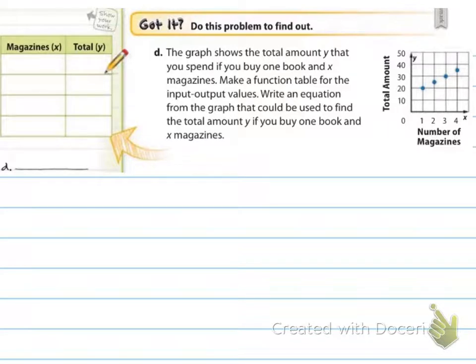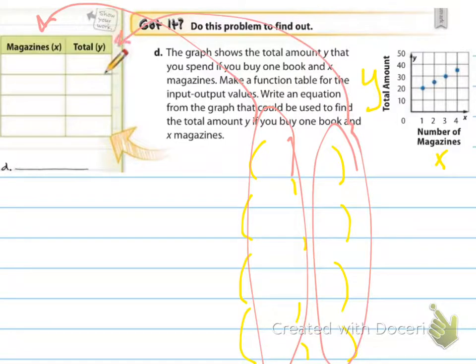Now you're going to do this on your own. The graph shows the total amount Y that you spend if you buy one book in X magazines. Make a function table for the input-output values and write an equation from the graph that could be used to find the total amount Y if you buy one book in X magazines. So we're looking for that function rule. Remember that this is our X and this is our Y. Go ahead and fill in the graph if you can. Really test yourself. You can write your ordered pairs, and then you'll have your X comma Y's right there. Here's all our X's, we're going to put that right here. Here's all our Y's, we'll put that right here. Go ahead and pause now.